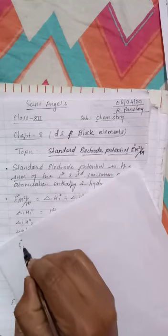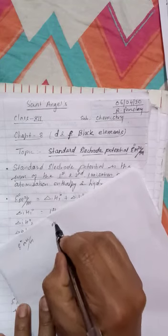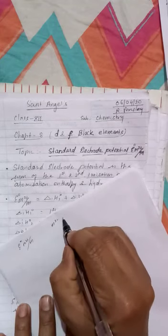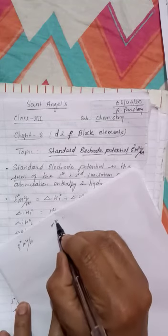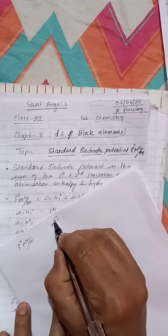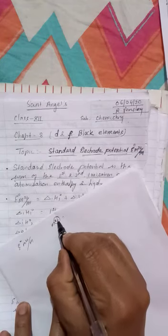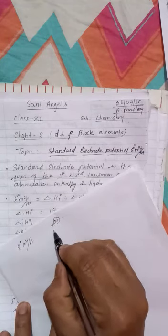I will discuss here E° M²⁺/M. M²⁺ means the oxidation state of the transition metal is +2. Here oxidation state +2 indicates the oxidation state of transition elements. Now I will explain this standard electrode potential.